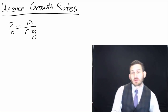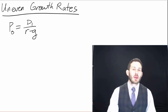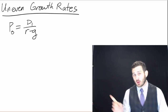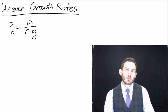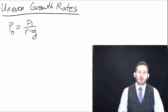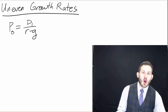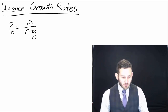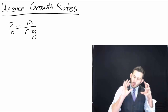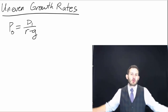Hello. We have previously looked at what happens when we have a constant growth rate according to this model, which is known as the Gordon growth or the constant growth model. We say that our current price is equal to our dividend next period divided by our required return minus our growth rate. One of our assumptions here is that growth is constant over the life of this company.